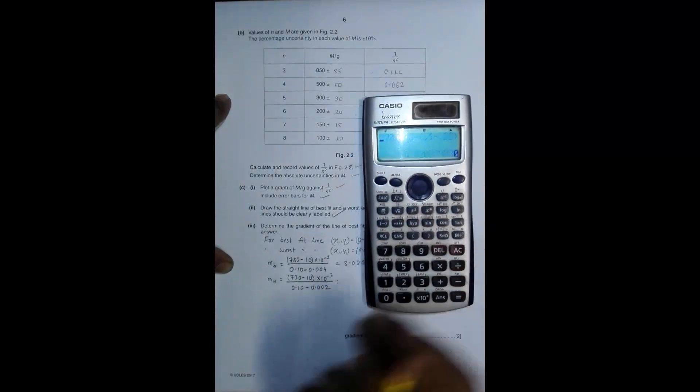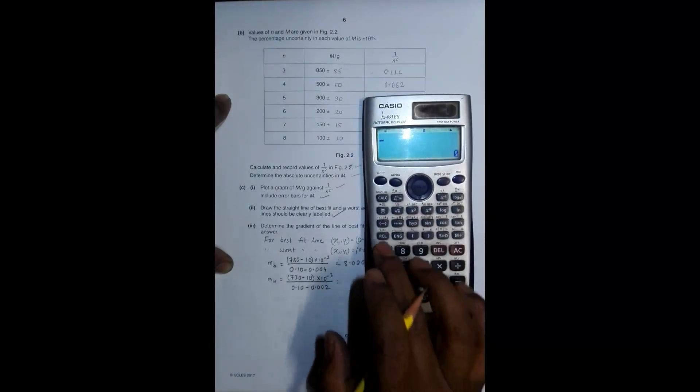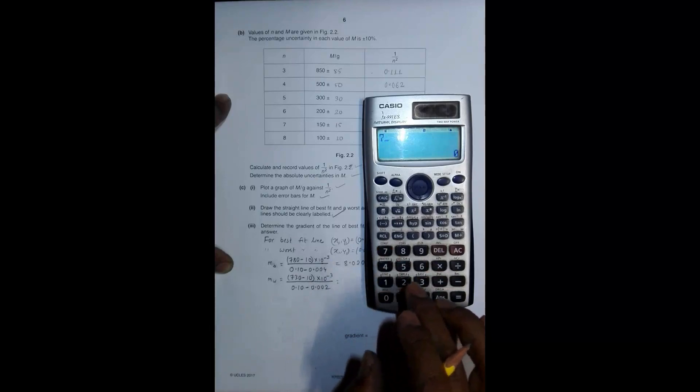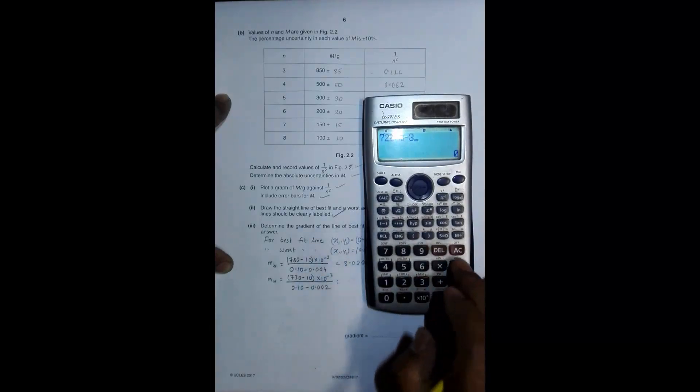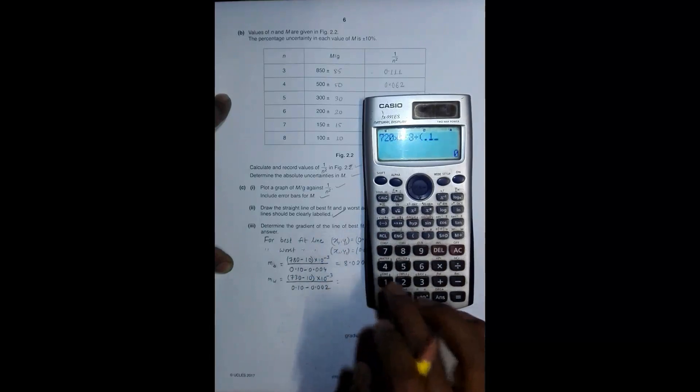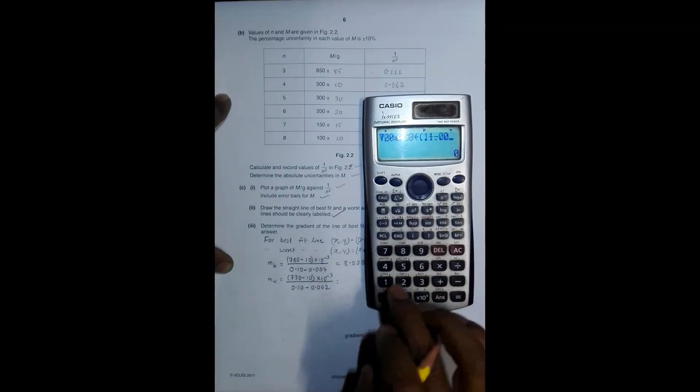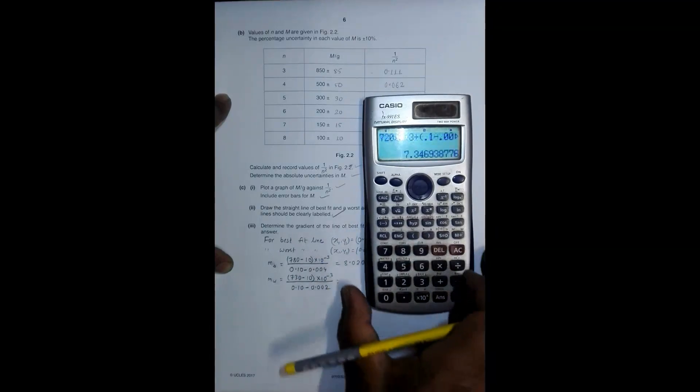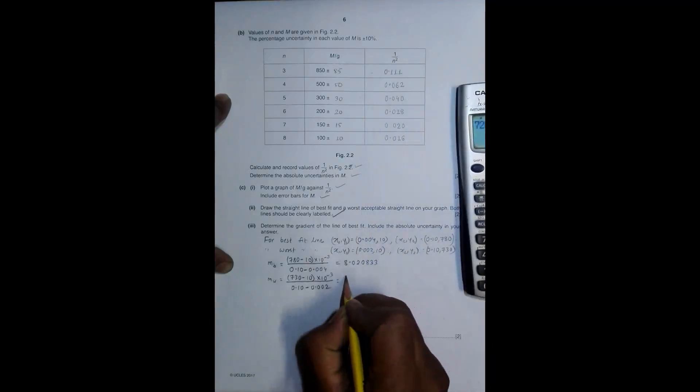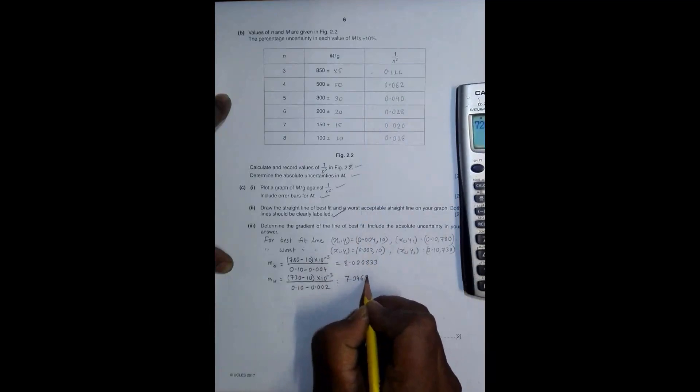It is 0.002. So this will be equal to, 730 minus 10 is 720 actually, 720 exponent minus 3 divided by 0.1 minus 0.002 equal to 7.346939.